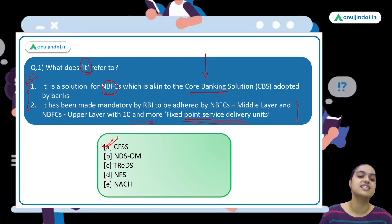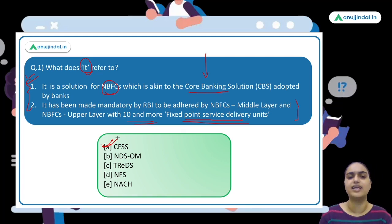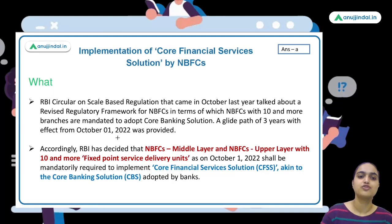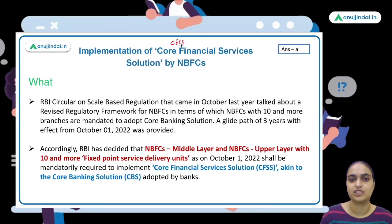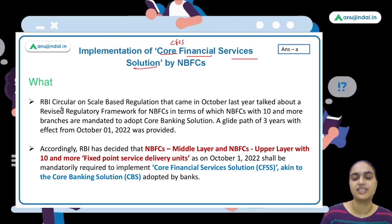CFSS stands for Core Financial Services Solution. RBI last year issued a circular relating to NBFCs, and that circular came up with a revised scale-based regulation framework for NBFCs.